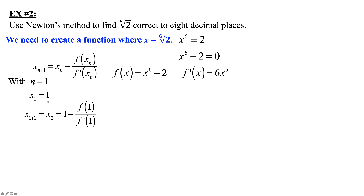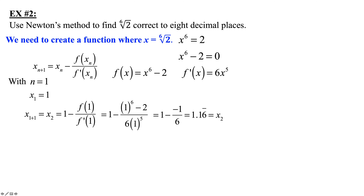x sub 2 equals 1 minus f(1) over f'(1). Crunching those numbers — all ones — gives 1.1666 repeating. That's the second approximation; from here it gets worse, so we move to the calculator.